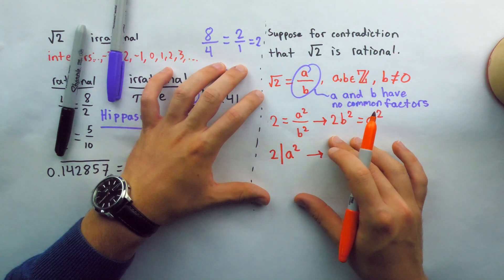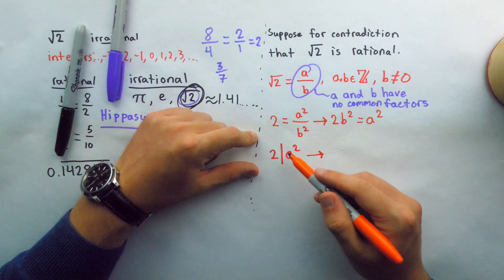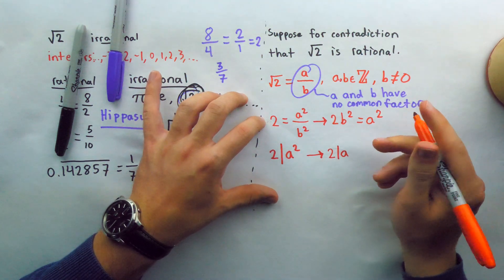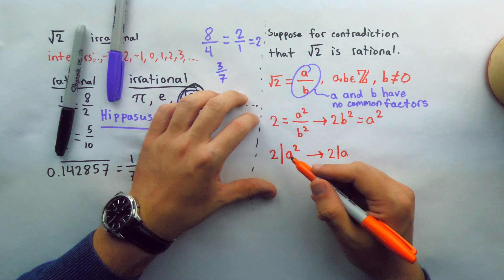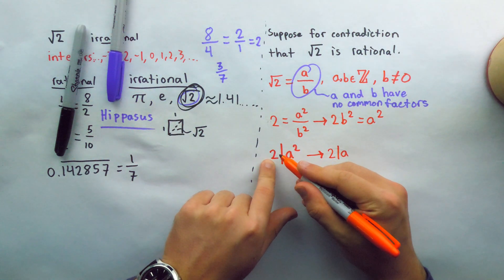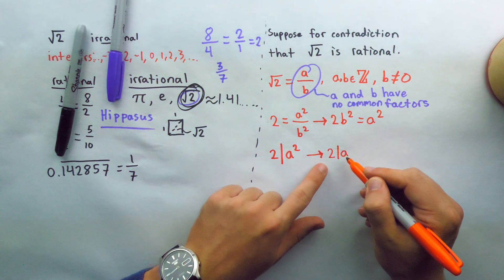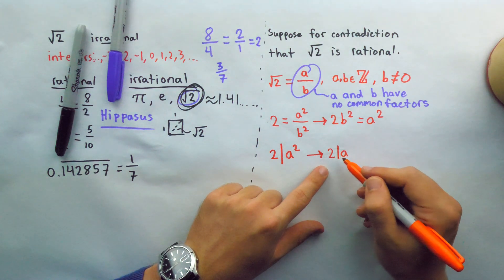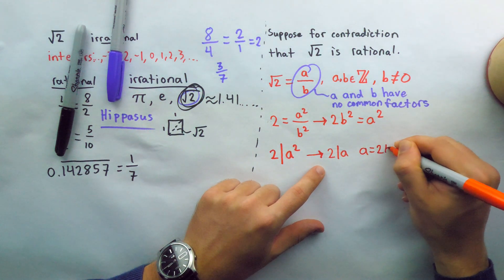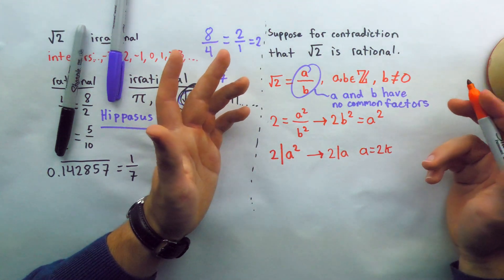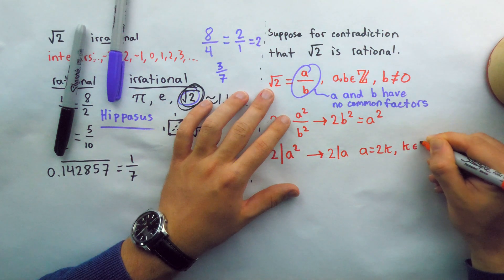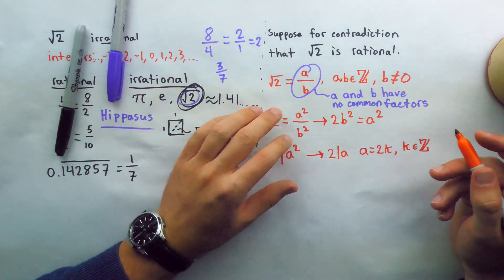Since A is a multiple of 2, we can write A = 2K, where K is an element of the integers. A has to equal 2 times something because it's a multiple of 2. So we can come back to the equation 2B² = A² and substitute on the right side: since A = 2K, we can write A² as (2K)².